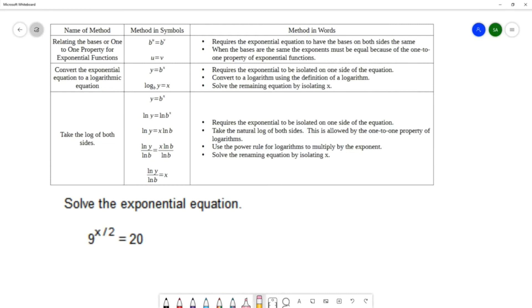At the top I have a table of different methods for solving exponential equations. The first method, sort of our go-to method, is called relating the bases or uses what's called the one-to-one property for exponents. In this method you try to make the bases the same on both sides.